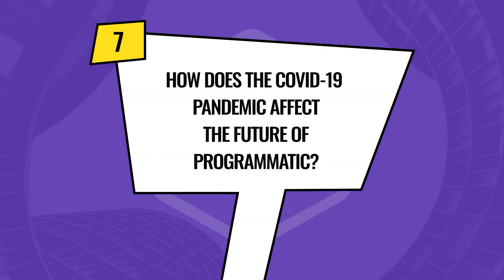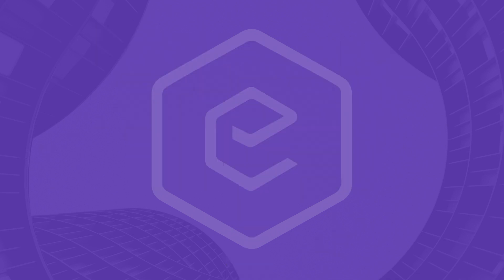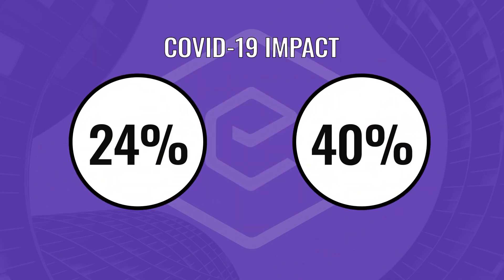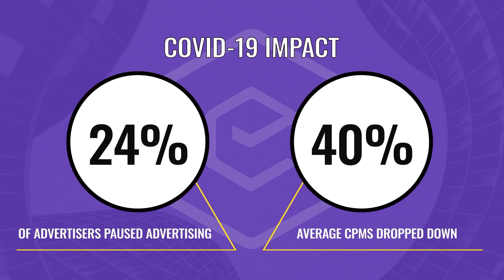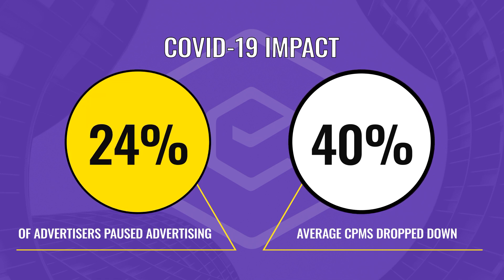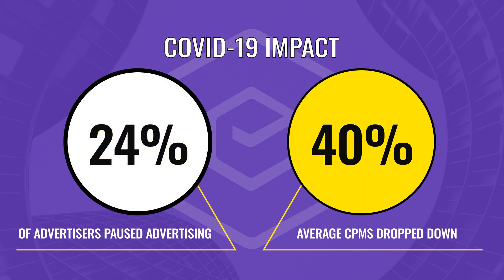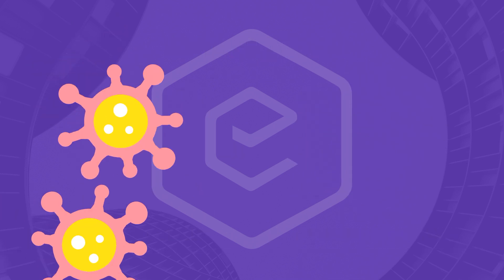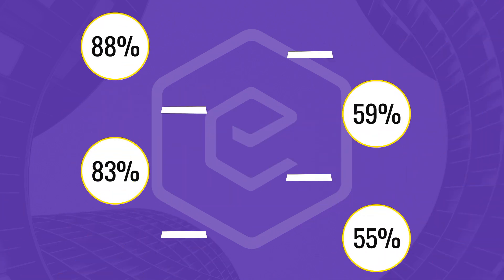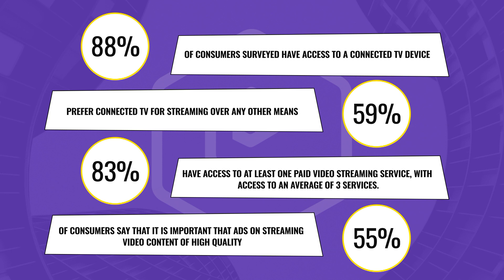How does the COVID-19 pandemic affect the future of programmatic? Most of you already know the short-term effects: average CPMs dropped, some verticals rose, others fell. Advertisers drastically decreased their ad spend, with 24% of them pausing advertising completely. Publishers experienced up to a 40% decrease in revenues and the whole industry's evolution got halted. Connected TV and ad-supported video on demand are on the rise while people stay inside — programmatic TV transactions grew by 40% in April and May, indicating advertisers are rebalancing ad spending toward this promising channel.